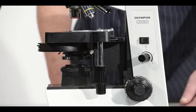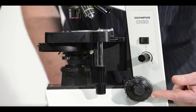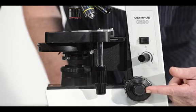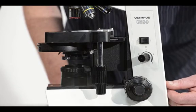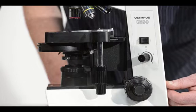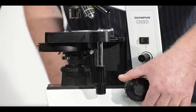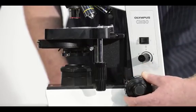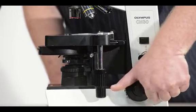There are two focus knobs. The large one is the coarse focus, and the small one is the fine focus. We typically use the coarse focus only at low magnifications in order to prevent damaging our slide. You can see that the coarse focus moves the stage up and down visibly, but the fine focus makes much smaller adjustments.